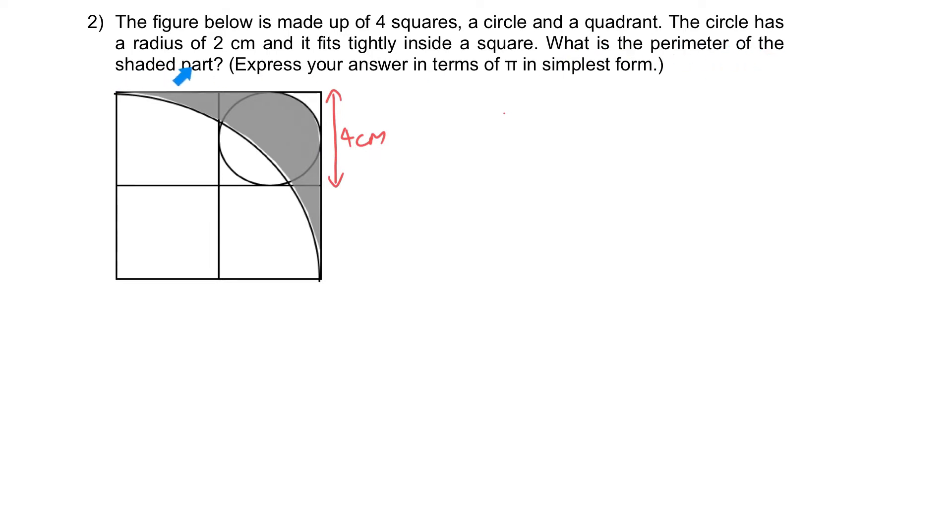What is the perimeter of the shaded part? Express your answer in terms of π in the simplest form. To find the perimeter, let's figure out which segments they are made up of. First, it is made up of the circumference of the quadrant here. Next, we have this horizontal length here, this vertical length here, and the last part, which is this.